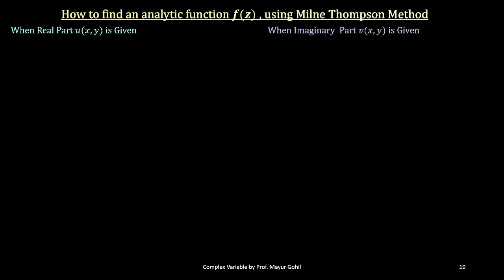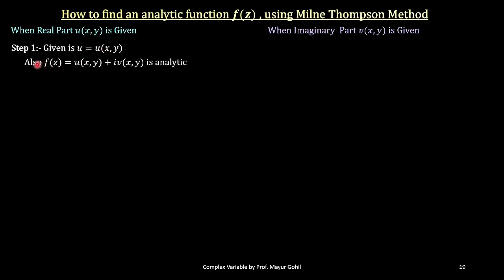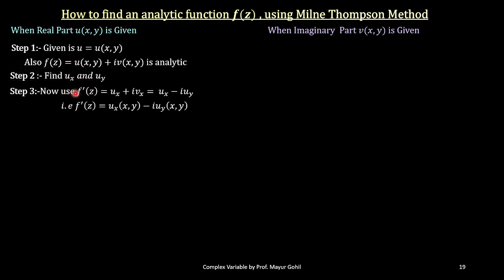In either of the cases, Millen-Thompson method is very useful. So let us see how, when the real part is given to us, we have step number one: we write u equals to u(x, y). After that we write the function f as u plus iv, which is an analytic function. After that we find the partial derivatives u_x and u_y, then we use the formula f'(z) equals u_x plus iv_x. Since we are given the real part u(x, y), we use the formula u_x minus i·u_y. This is the version of the formula derived from the Cauchy-Riemann equations.